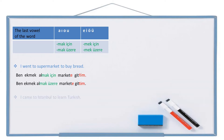Let's see one more example: I came to Istanbul to learn Turkish. Let's try to write it. I — ben. Turkish — Türkçe. Learn — öğren. To learn — öğrenmek için. Istanbul — İstanbul. To Istanbul — İstanbul'a. Come — gel. Came — geldi. I came — geldim.